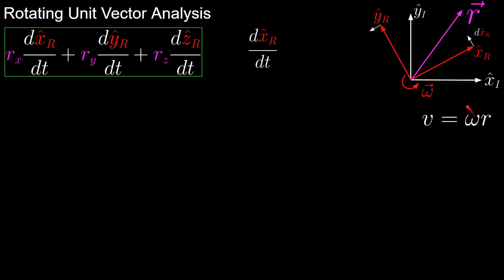This equation reduces down to just v equals omega, because the magnitude of x-hat_r is equal to 1 since it's a unit vector. In this case, its direction is in the rotating y-hat_r direction. So from this, we can conclude that the derivative of the x unit vector is equal to omega in the y-hat_r direction, since the magnitude of the x-hat vector is 1.